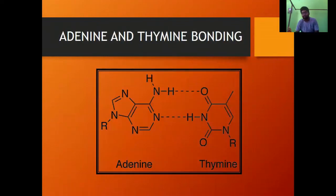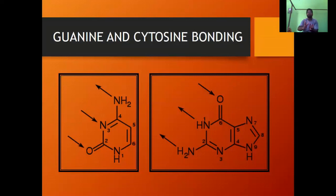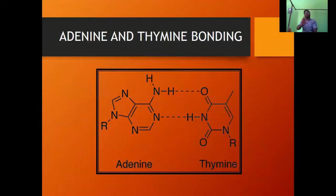Adenine and thymine bond through 2 hydrogen bonds involving nitrogen, oxygen, and hydrogen at two regions. Guanine and cytosine have 3 hydrogen bonds, each involving nitrogen, hydrogen, and oxygen, bonding at three regions. So adenine-thymine pairs bond at two regions, while guanine-cytosine pairs bond at three regions.